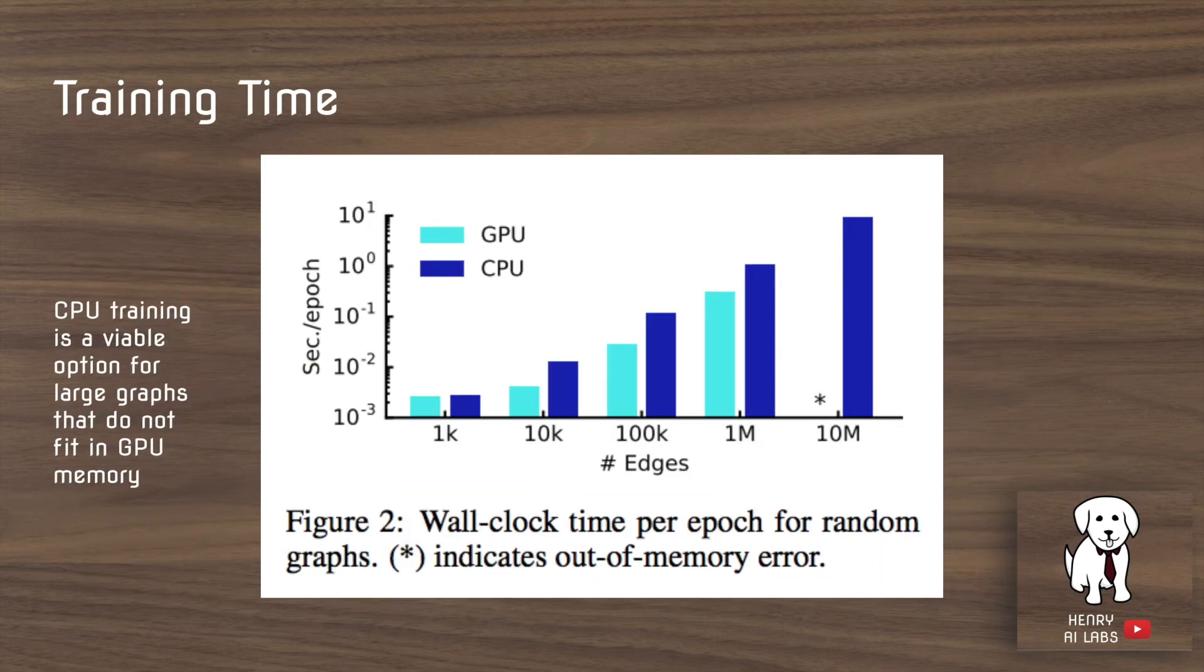This plot shows an interesting characteristic of the training time of GCNs. Graph data is very difficult to fit into memory, because the adjacency matrix in the GCN has to be stored. So in the case of 10 million edges in the graph, the GPU runs out of memory, and it can't run the GCNs. So as the plot shows, GPU implementations as of this paper won't necessarily outperform a CPU implementation.